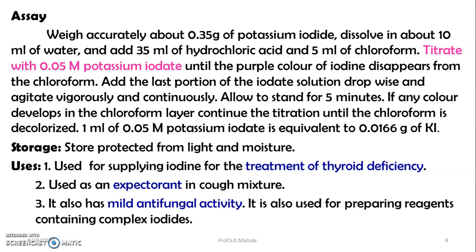Storage: Potassium iodide should be stored protected from light and moisture. Uses: Potassium iodide is used for supplying iodine for the treatment of thyroid deficiency. It is also used as an expectorant in cough mixtures, has mild antifungal activity, and is used for preparing solutions containing complex iodides.